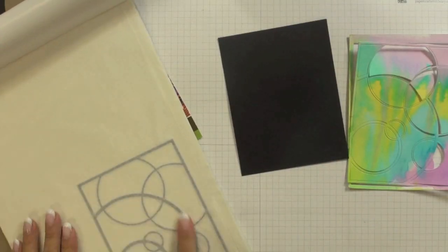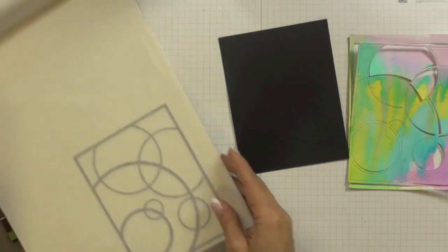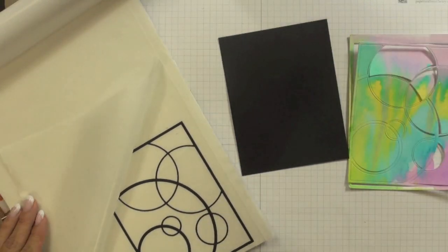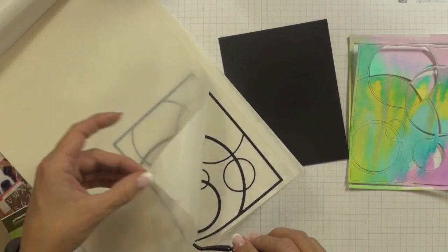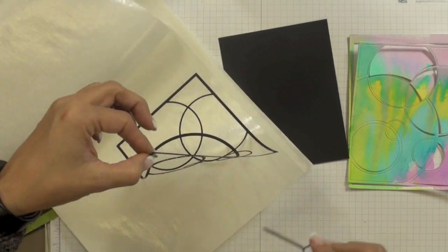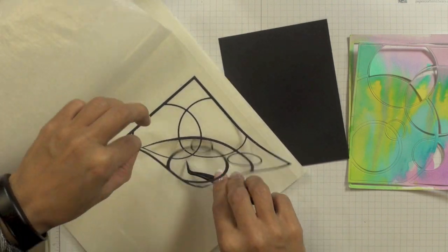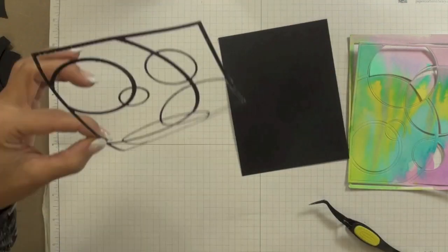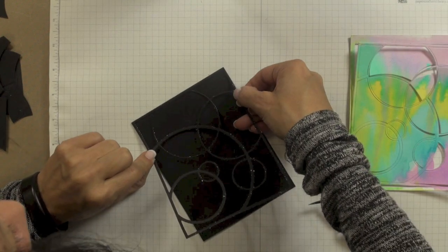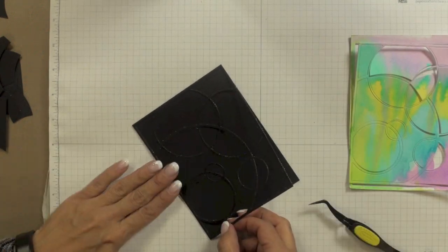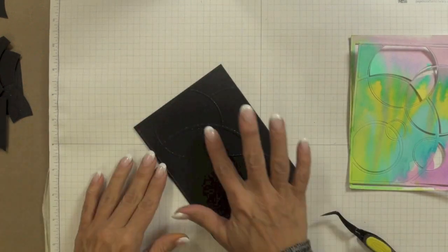Now I cut my panel out of that same Simon Says Stamp black cardstock and the dimensions of that are the size of a card front four and a quarter by five and a half inches. Now because the frame is so fine in order to stick it down I decided to use my Thermoweb sticky dots which is a sheet of little adhesive dots so I simply pressed my frame onto that sheet and then carefully picked it up with my tweezers.